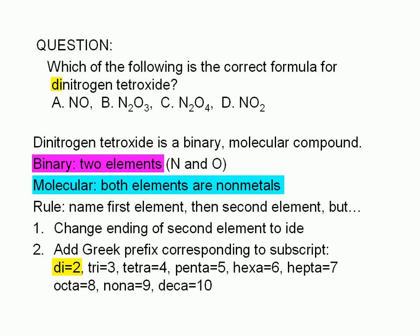The prefix di corresponds to a subscript of 2. Therefore, the subscript for nitrogen in this compound is 2. So choices A and D are wrong.